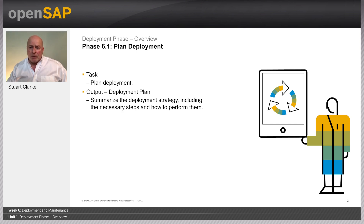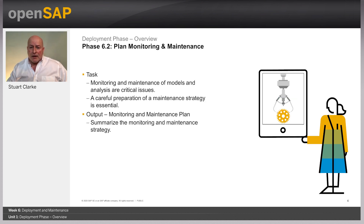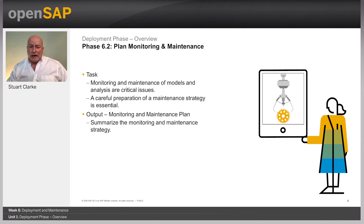The output is a deployment plan that summarizes the deployment strategy, including any necessary steps and how to perform them. The next task is to plan the monitoring and maintenance of the model and results. Monitoring and maintenance are critical issues, especially if the data project results become part of the day-to-day business and its environment. A careful preparation of a maintenance strategy helps to avoid unnecessarily long periods of incorrect usage of the models, maybe after a model's performance has degraded. The output is a monitoring and maintenance plan that summarizes the monitoring and maintenance strategy, including any necessary steps and how to perform them.